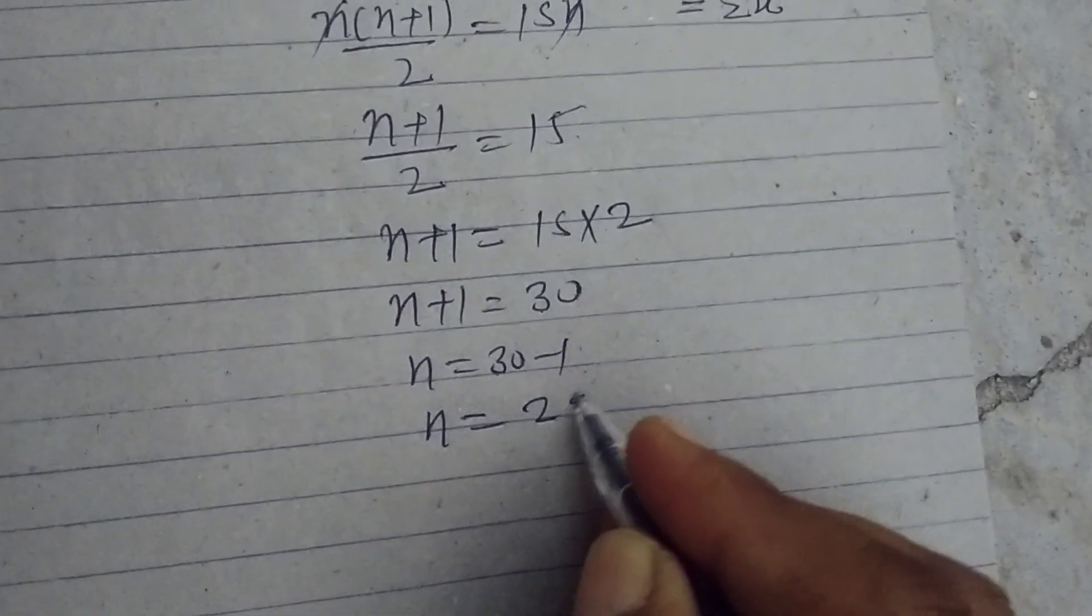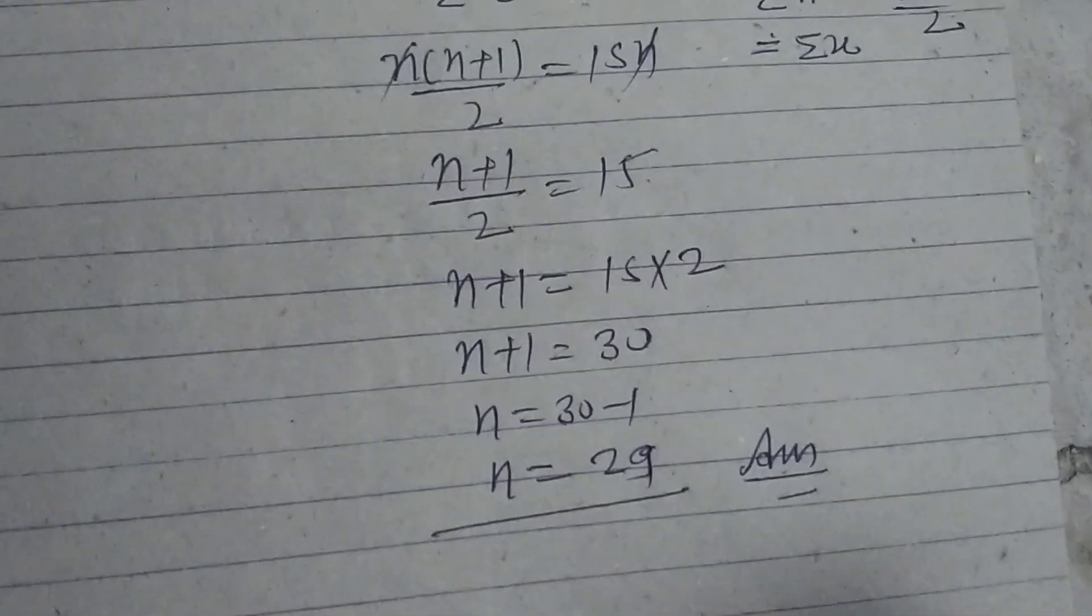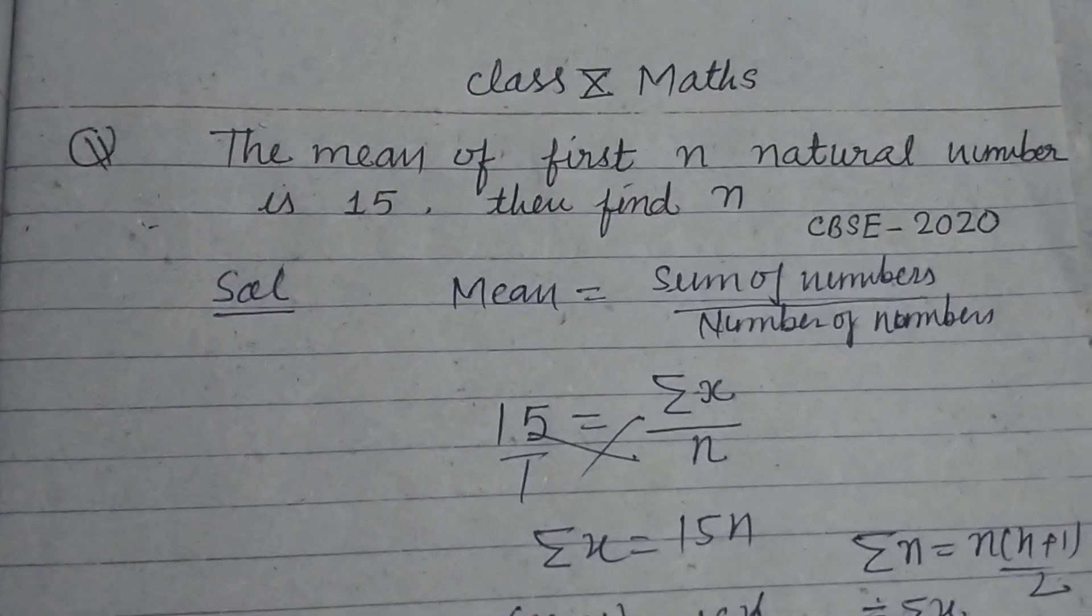So this is 29. Therefore, the value of n is 29, which is our answer. I hope you got it. Please like the video, subscribe to the channel, and thanks for watching.